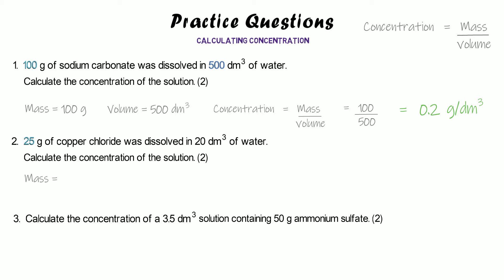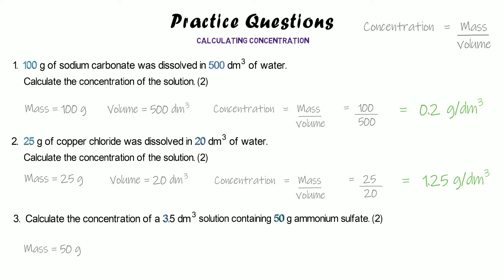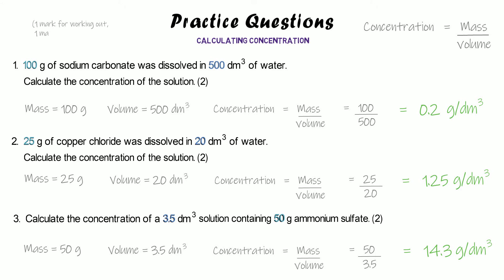For the second question, the mass is 25 grams dissolved in a volume of 20 decimetres cubed. Mass divided by volume: 25 divided by 20 gives a concentration of 1.25 grams per decimetre cubed. For the final question, the mass is 50 grams and the volume is 3.5 decimetres cubed. 50 divided by 3.5 gives a concentration of 14.3 grams per decimetre cubed.